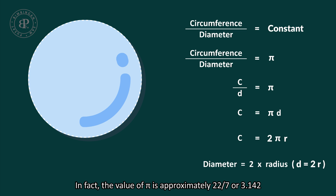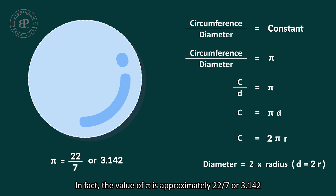The value of pi is approximately 22 over 7, or 3.142.